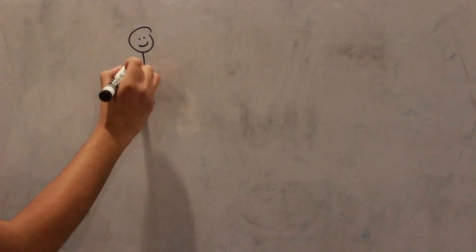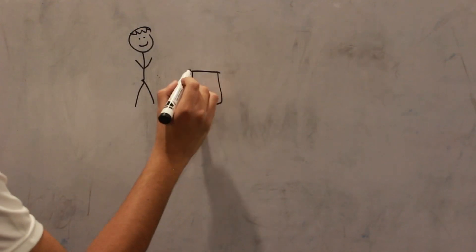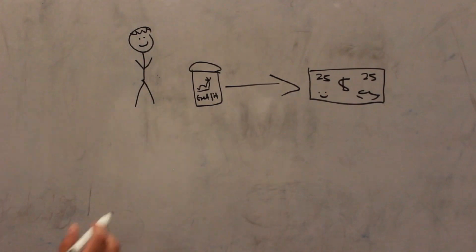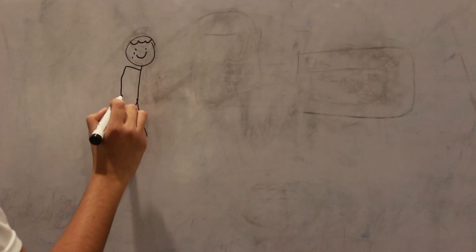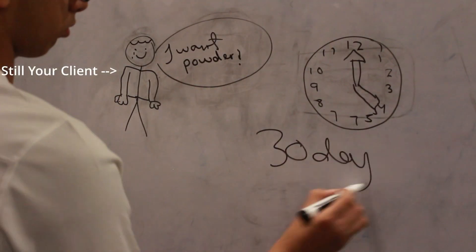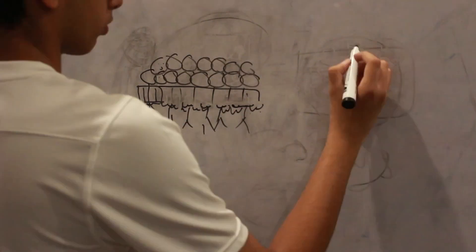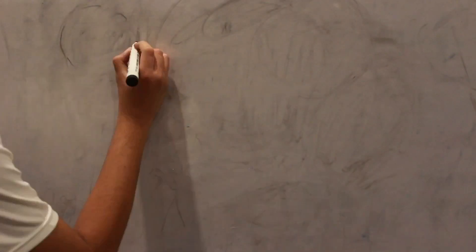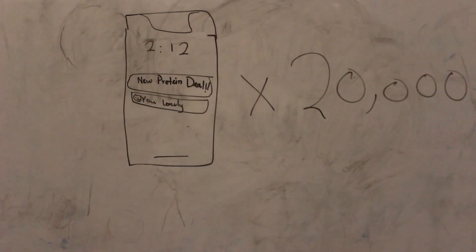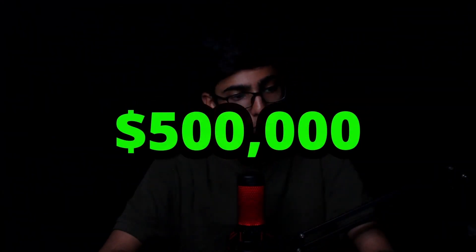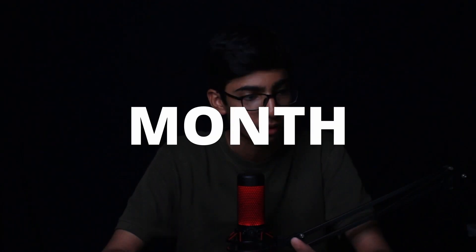Just imagine this: your client has 20k customers per month and is selling protein powder for $25. He knows that after roughly 30 scoops or 30 days, their customer will run out of that product. If you could build a system that automatically sends a message to all 20k customers on either SMS or WhatsApp, that would bring in roughly 20k times $25 — which is $500,000. And even if only 1% bought, that would bring $5k per month.